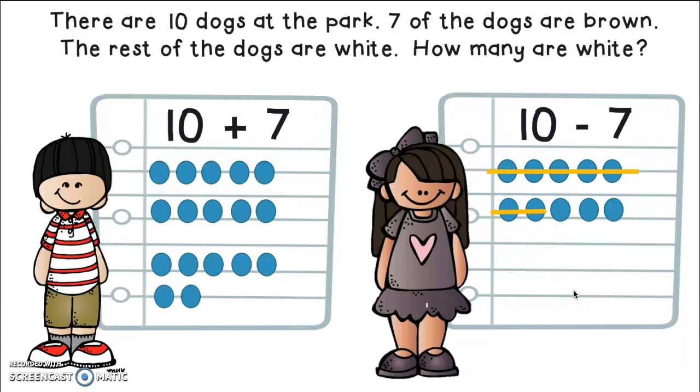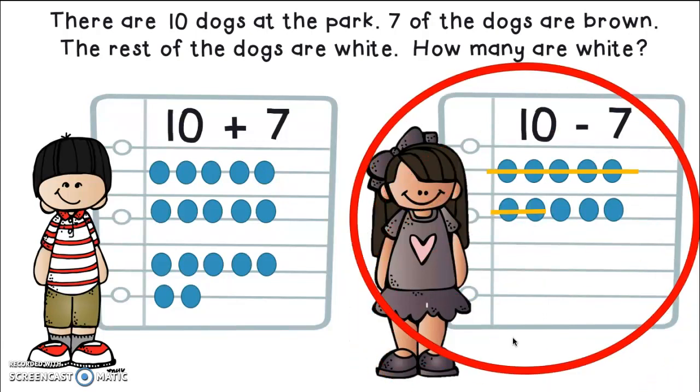So who is right, friends? Is it Shane or is it Kara? Go ahead and press pause. Talk with your buddy and tell them who you think is right and why you think they're correct. Did you talk about who you think is correct? Who is it? I agree. Kara is correct this time. How did you know? Yes, because if these were all the dogs at the park, 10, she drew a picture of the dogs and then seven were brown. She just crossed off the seven. So she knew the rest of them had to be white. Excellent job, Kara.